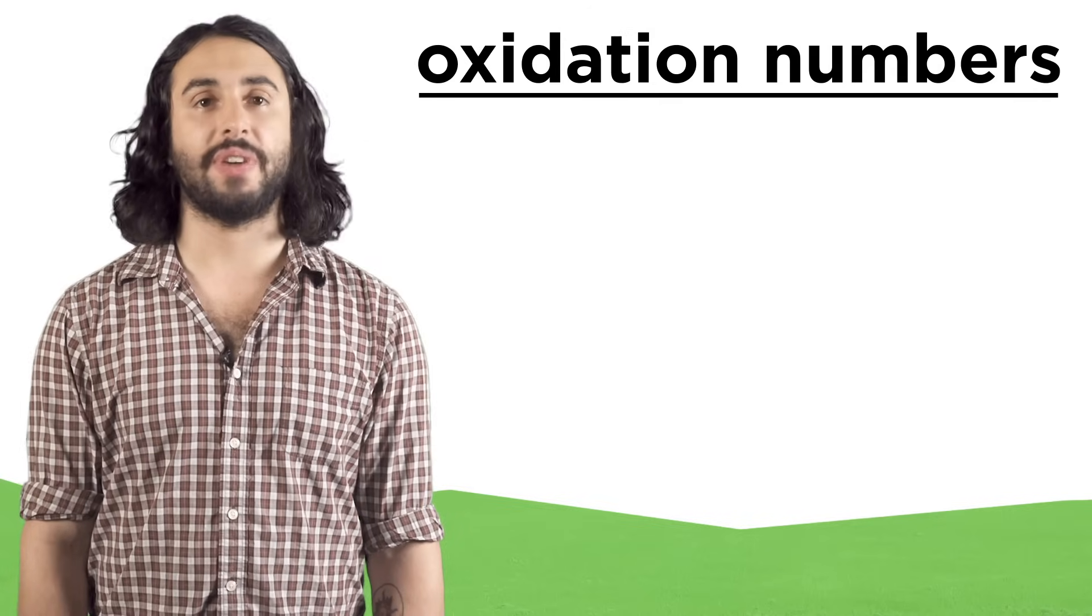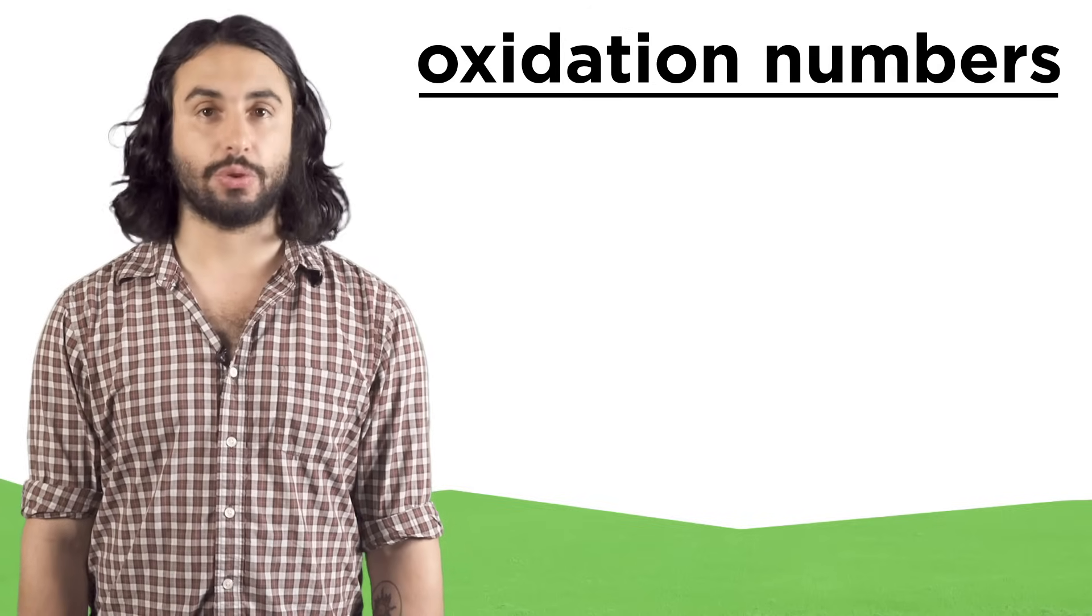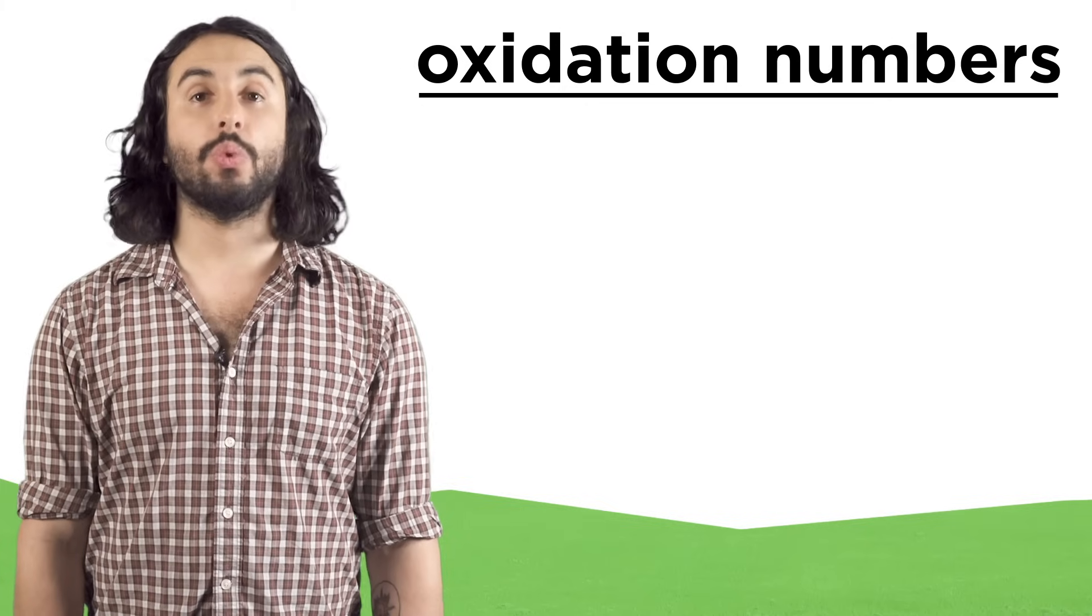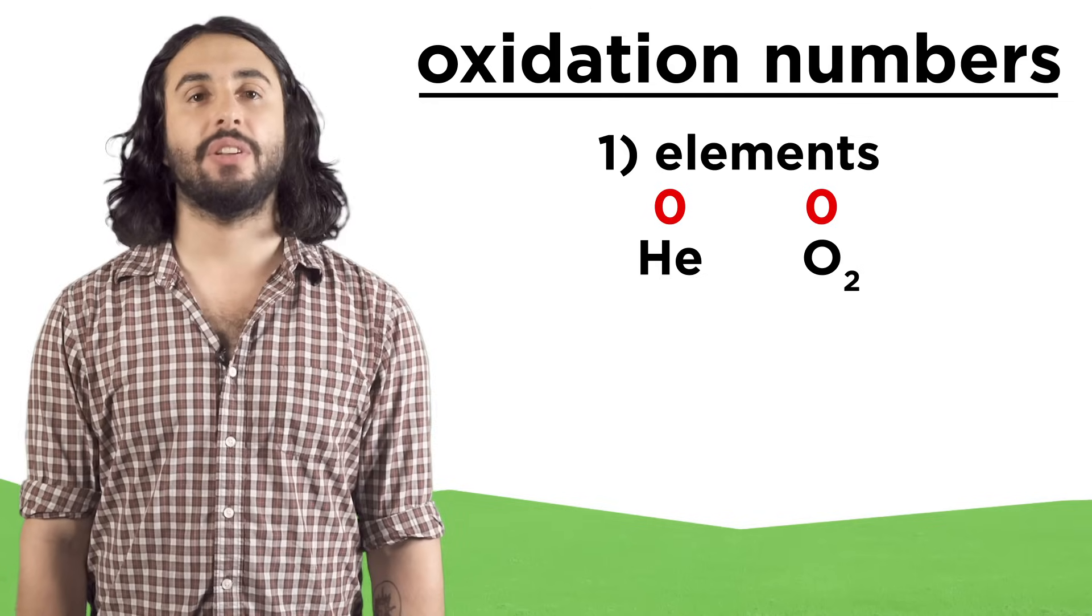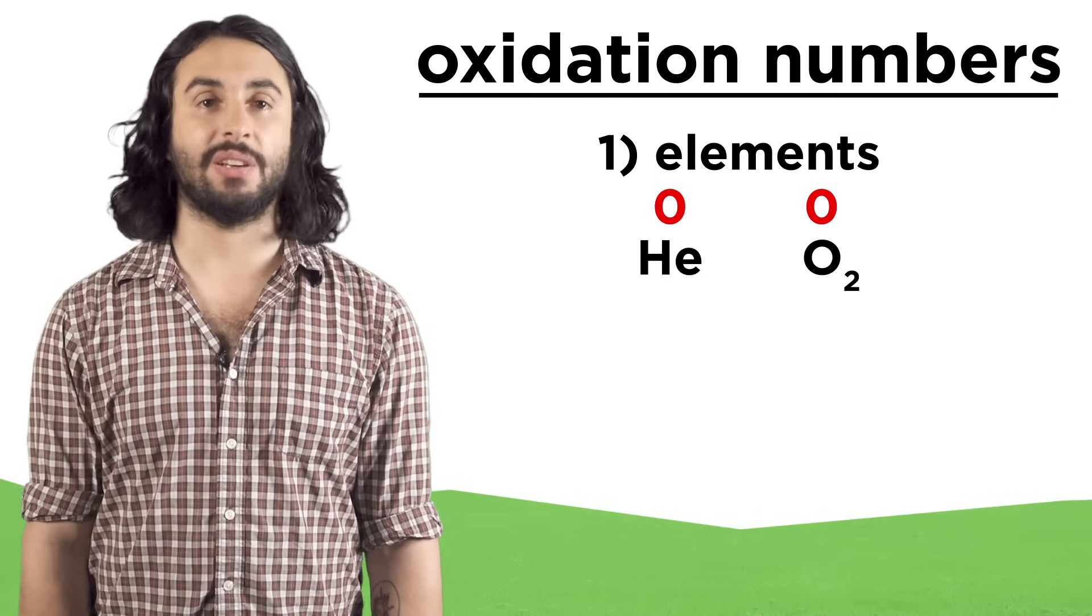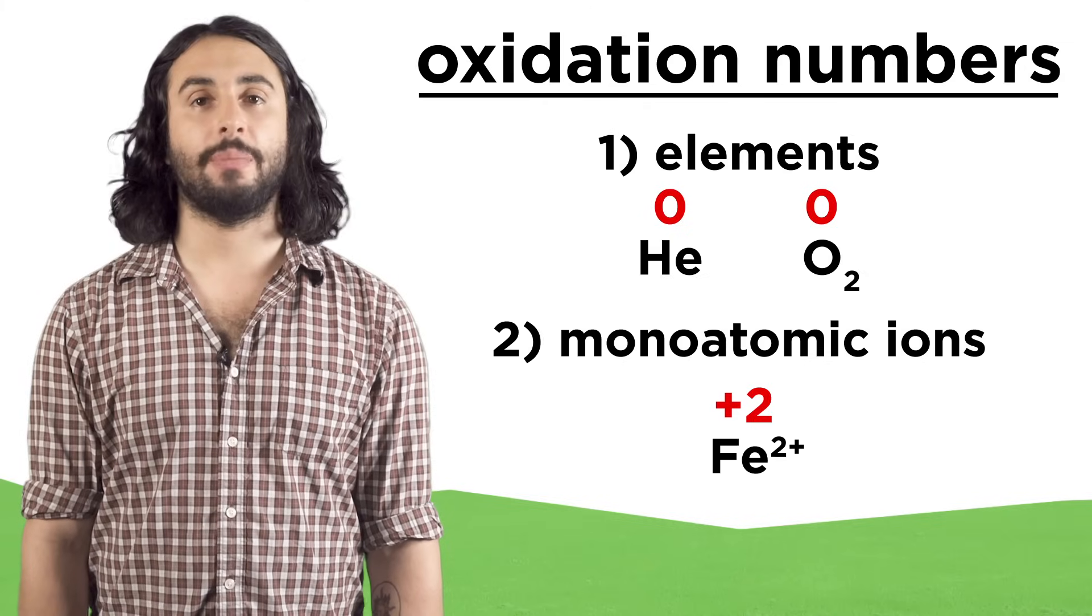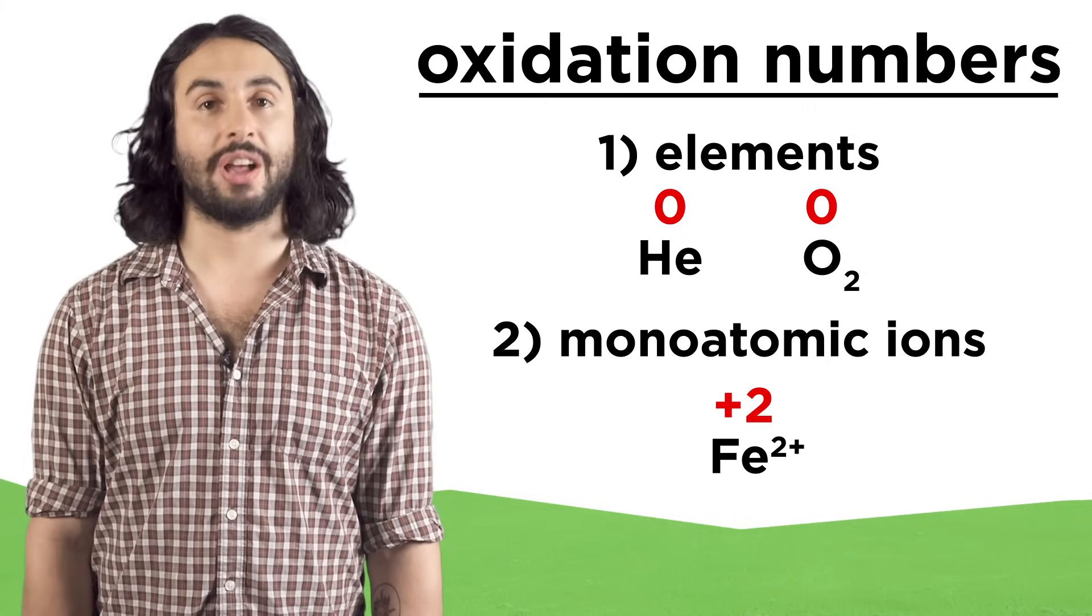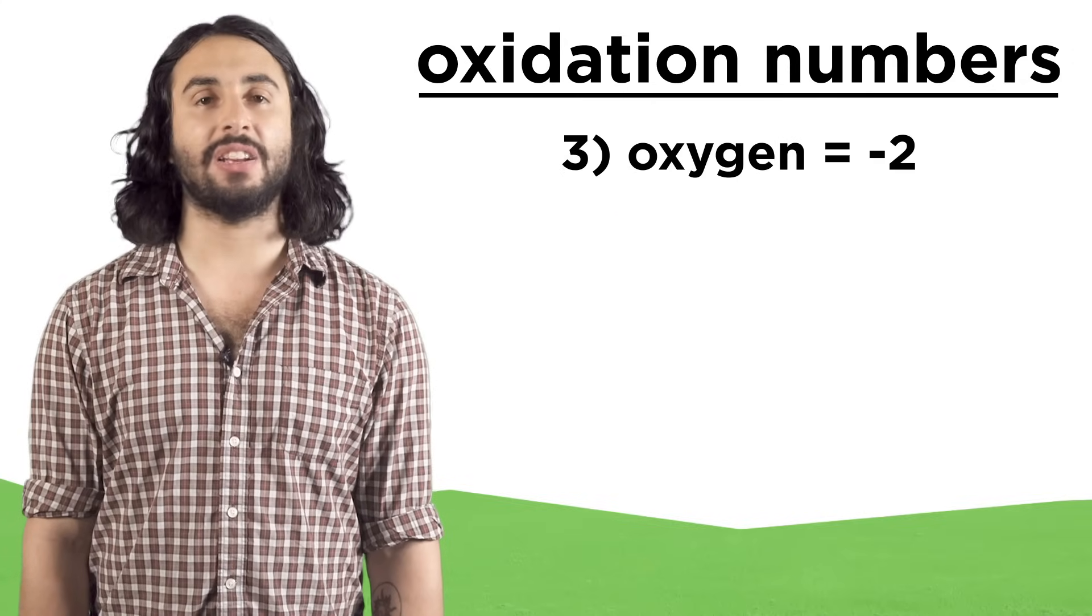These are like hypothetical charge values for each atom in a molecule, but they are not actual electrical charges. Here are some rules for assigning oxidation numbers: For an element, the oxidation number is always zero. If it's a monoatomic ion, the oxidation number is the same as the charge on the ion. Oxygen is almost always -2, except for in peroxides.